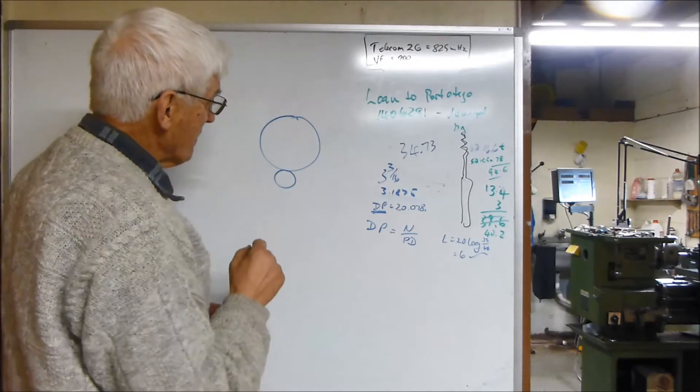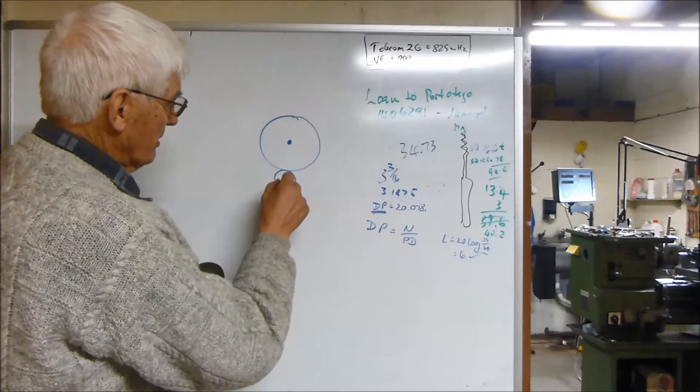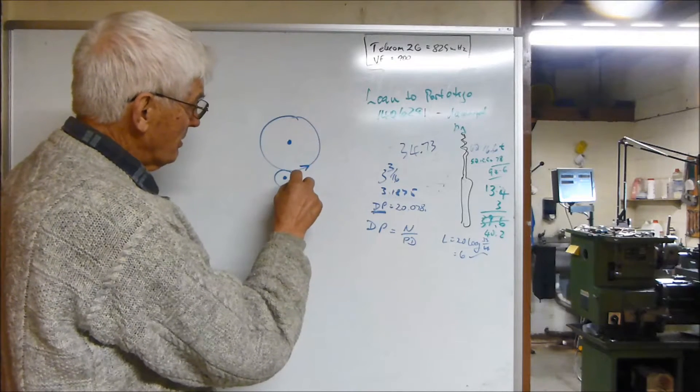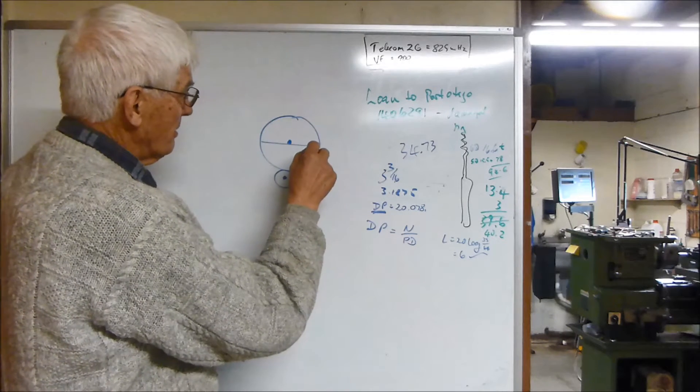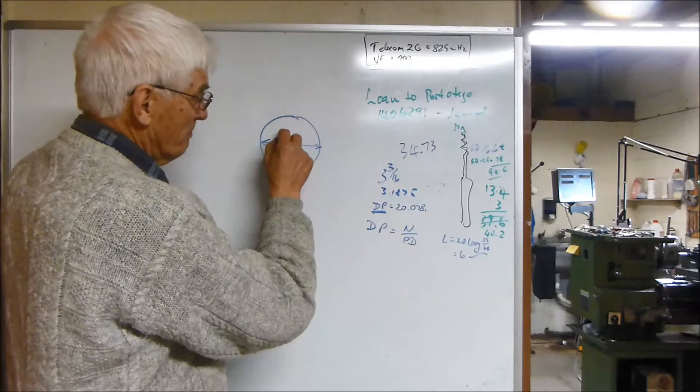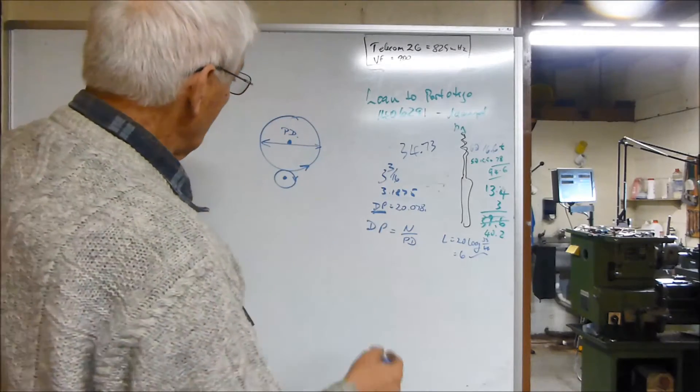So if we had two plain shafts that were rotating by friction alone, then this diameter here is called the pitch diameter. PD and DP are confusing.